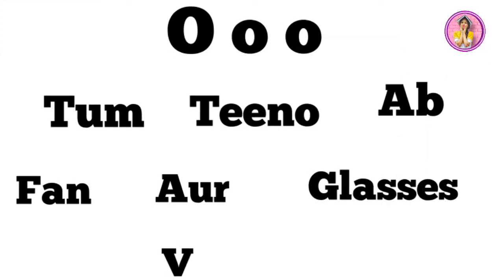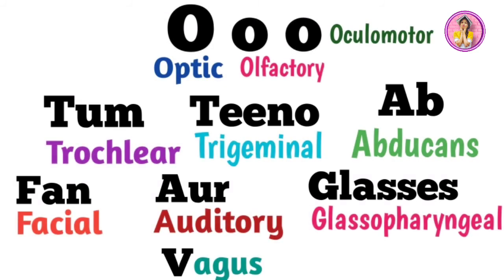The trick is: O, you three now, Fan and glasses, V. So we have three O's — the first O is Olfactory, the second O is Optic, and the third O is Oculomotor. Then 'Tino' means Tri — Trigeminal. Then Ab — Abducens. Fan — Facial. Or — Auditory. Glasses — Glossopharyngeal. And V — Vagus. These are all my hand notes, so you can easily write them and use them in your exam — but don't write the trick itself in the exam.